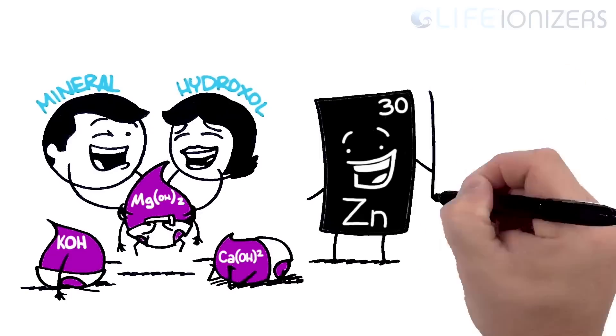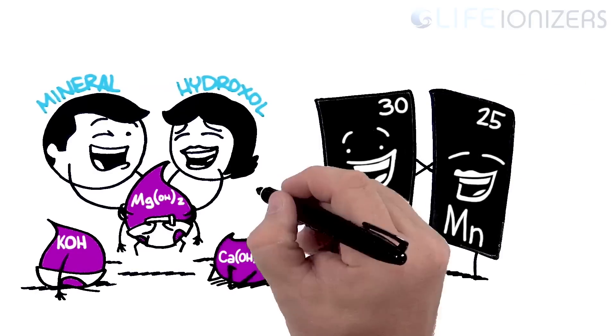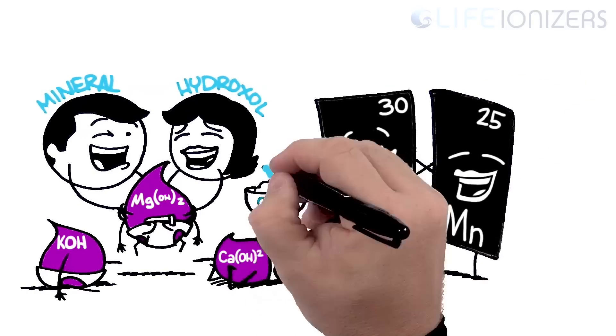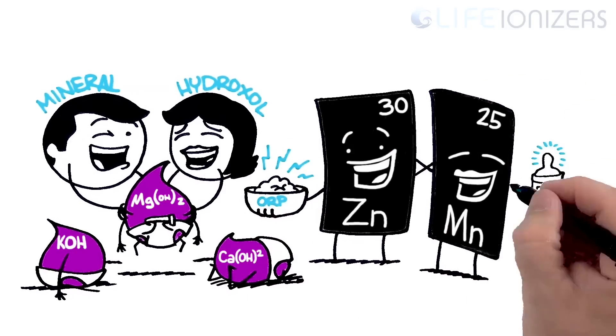Trace minerals like zinc and manganese also make appearances in order to create powerful ORP antioxidants and high pH levels.